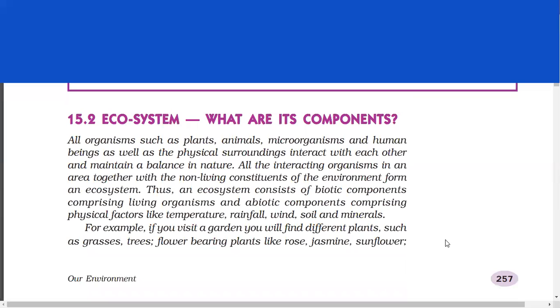Ecosystem. What are its components? All organisms such as plants, animals, microorganisms and human beings as well as the physical surroundings interact with one another and maintain a balance in nature. All the interacting organisms in an area together with the non-living constituents of the environment form an ecosystem. Thus, an ecosystem consists of biotic components comprising living organisms and abiotic components comprising physical factors like temperature, rainfall, wind, soil and minerals.